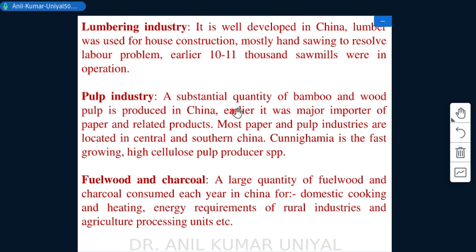Forest-based industries in China include a well-developed lumbering industry, where lumber is used mostly for house construction. Hand sawing was preferred to resolve the labor problem, given China's large population. Earlier, 10,000 to 11,000 saw mills were in operation, and this number has increased over time.